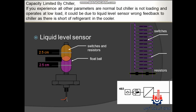Capacity limited by chiller: If you experience all other parameters are normal but the chiller is not loading and operates at low load, it could be due to the liquid level sensor giving wrong feedback to the chiller, as there is a shortage of refrigerant in the cooler.